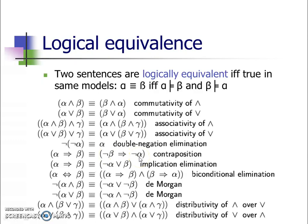So whenever in the knowledge base we have a rule which states that the presence of something implies another thing, but the percept indicates that the second thing does not exist at all, in that case we could use the law of contrapositive to arrive at the required deduction. Also, in some cases we may have to eliminate the implication. The rule is: when alpha implies beta, it is equivalent to negation of alpha or beta.